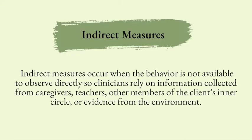Indirect measures occur when the behavior is not available to observe directly. Clinicians have to rely on information collected from caregivers, teachers, and other members of the client's inner circle, or evidence from the environment. The person assessing the behavior does not see the behavior themselves, so the information can be subjective or unreliable at times. This is why clinicians should not base all of their interventions on indirect measures alone. Indirect measures can take the form of interviews, surveys, checklists, or reading documents from medical providers or previous companies that provided information about the client.